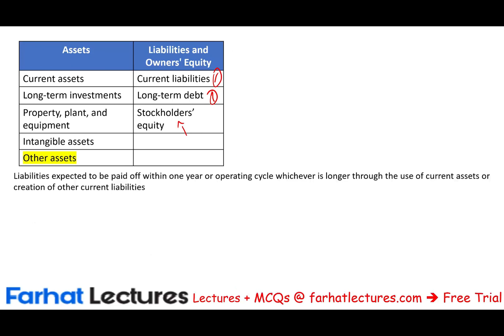So liabilities — what are they? Liabilities are debt. Any liability expected to be paid off within one year or the company's operating cycle, whichever is longer — we assume one year is longer — by using a current asset or creating another liability, is considered a current liability. If you have a debt due within one year and you pay it off with cash, which is a current asset, or you refinance by creating another current liability to replace it, that qualifies.